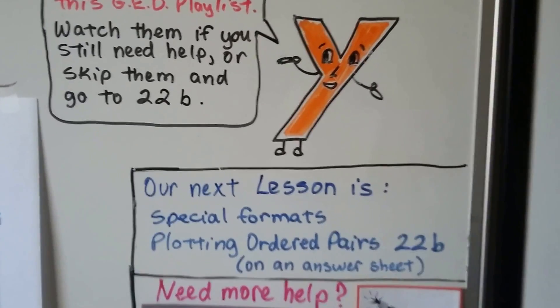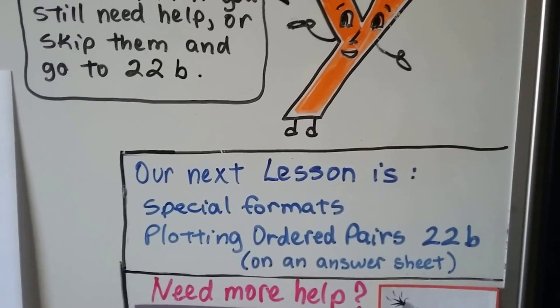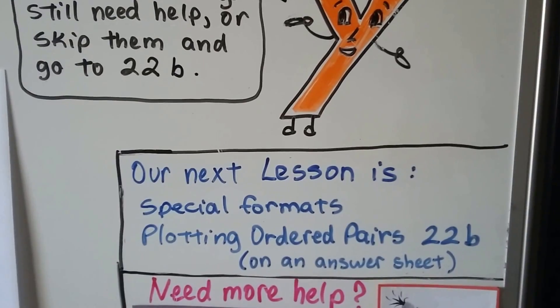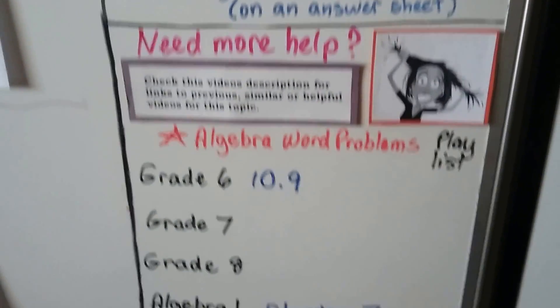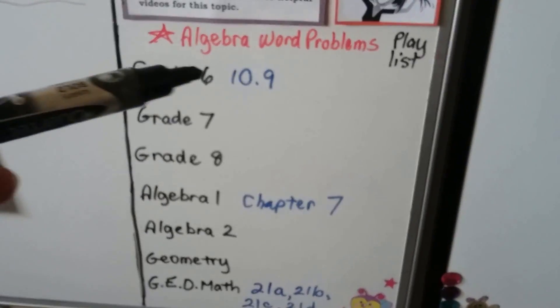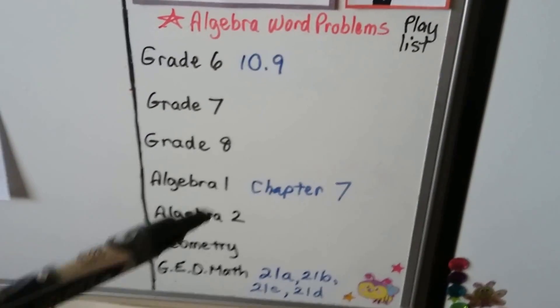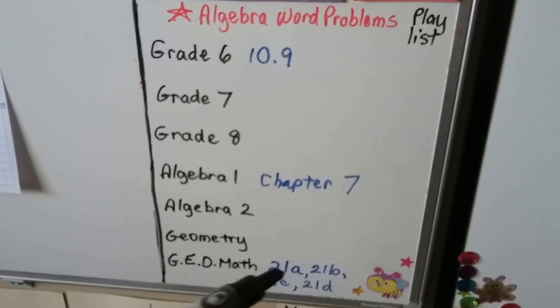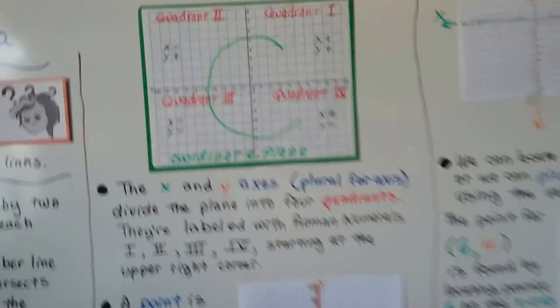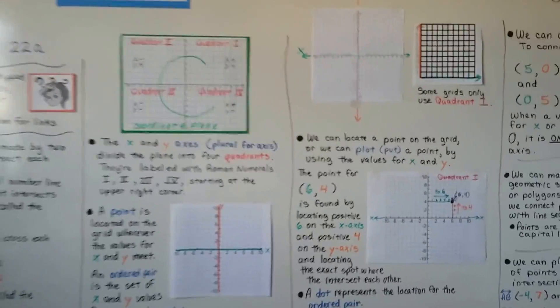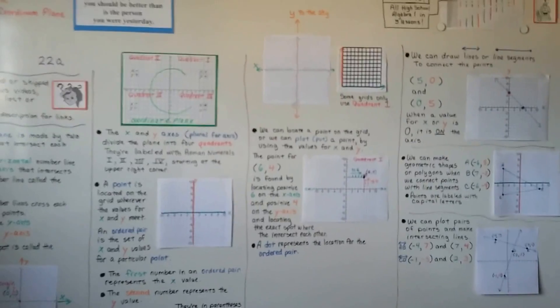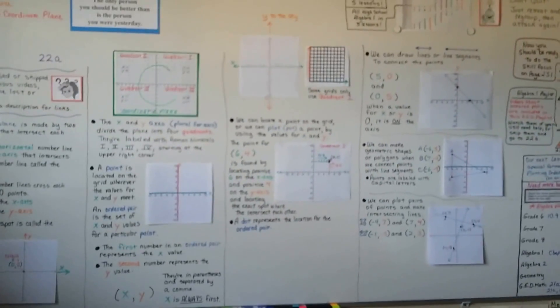22b is going to be about special formats. We're going to learn about plotting ordered pairs on that GED answer sheet. There's going to be links from grade 6, this is about the coordinate plane, and some chapter 7 videos that could help you in the previous videos from this GED playlist if you need to go back. So, keep trying. You know I'm proud of you, and I'll see you in the next video. Bye!